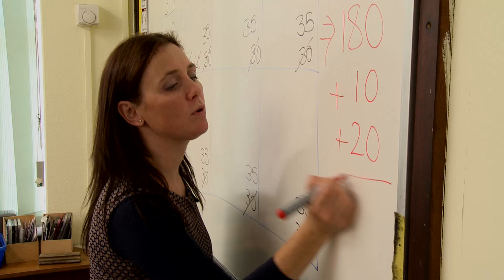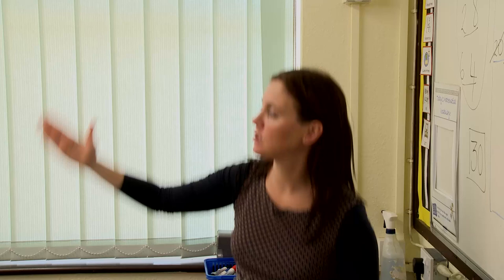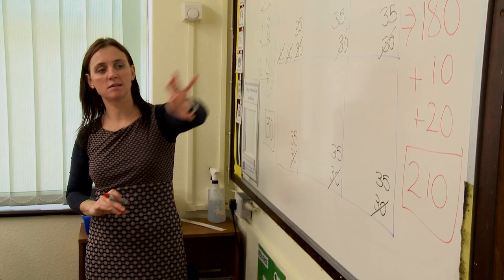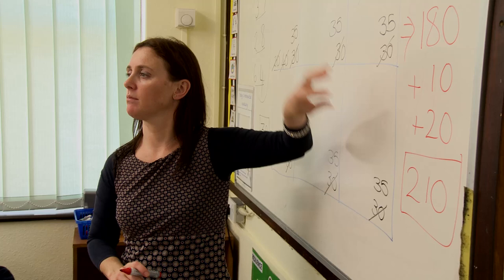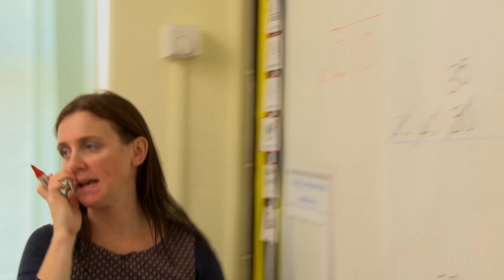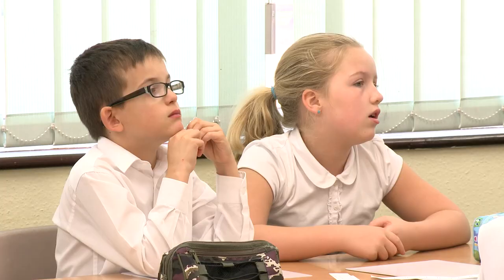9 lots of 20 are 180. With the remaining 10 and 20 added, that gives 210. So we know the total of 1 add 2 add 3, all the way up to 20, is 210. I need to split that 210 over 6 boxes equally. What calculation would I do to split 210 into 6 equal boxes? Jessie answers: 210 divided by 6.